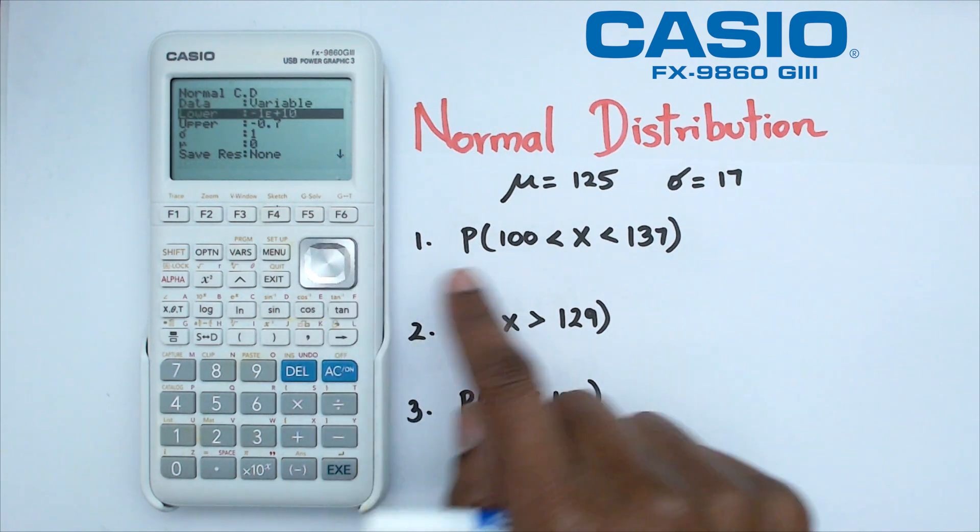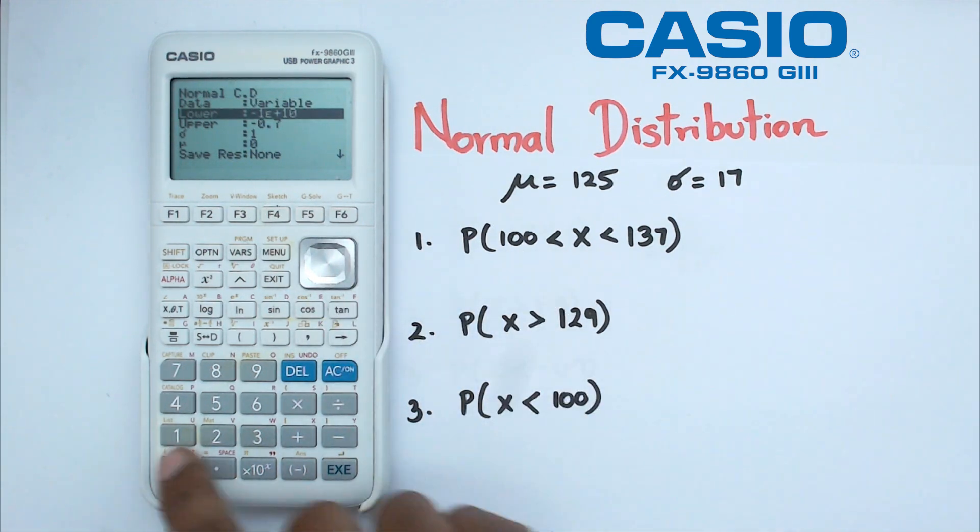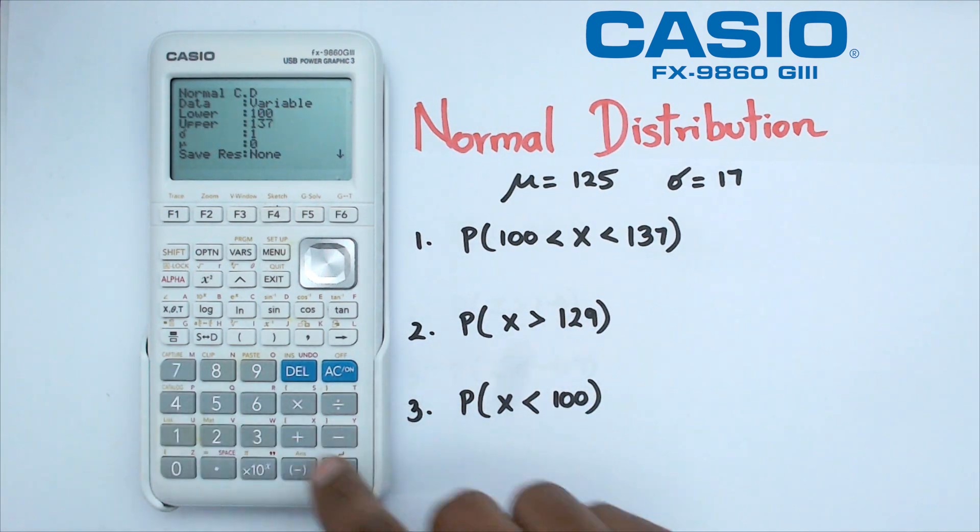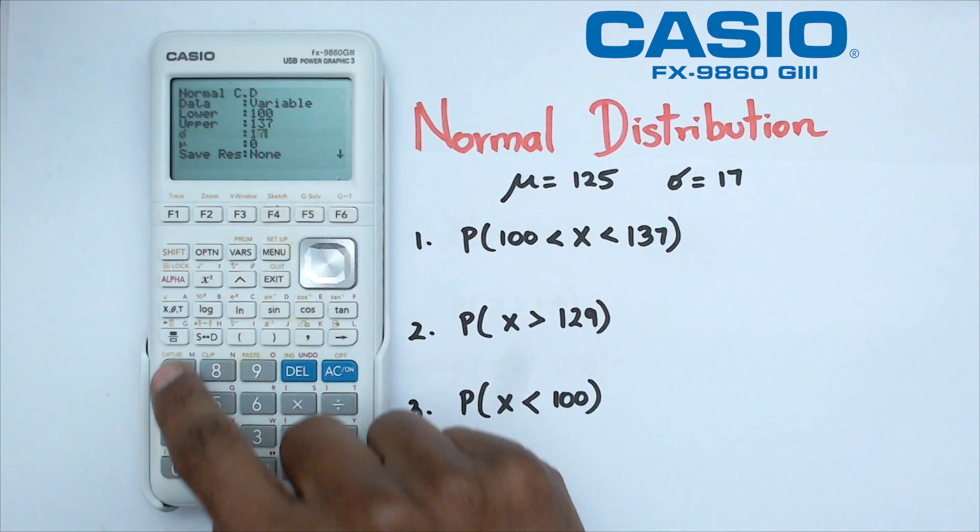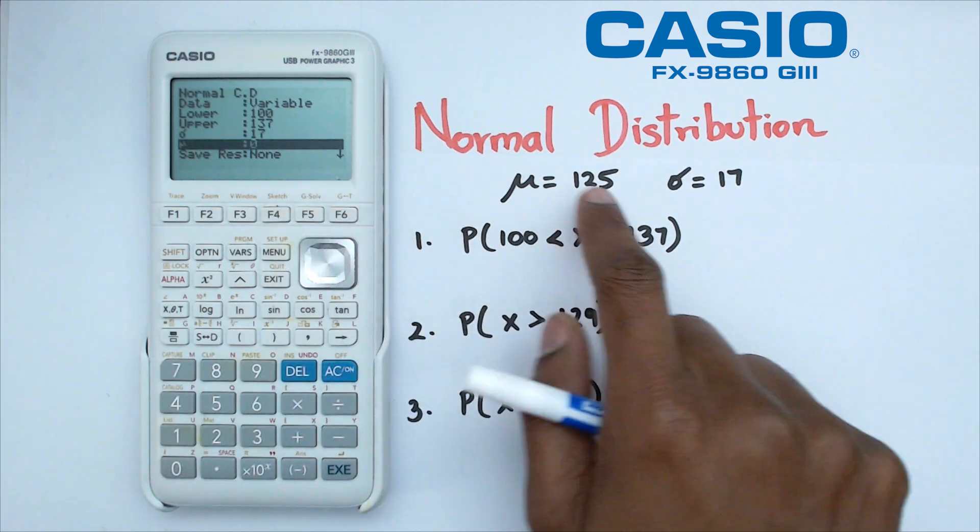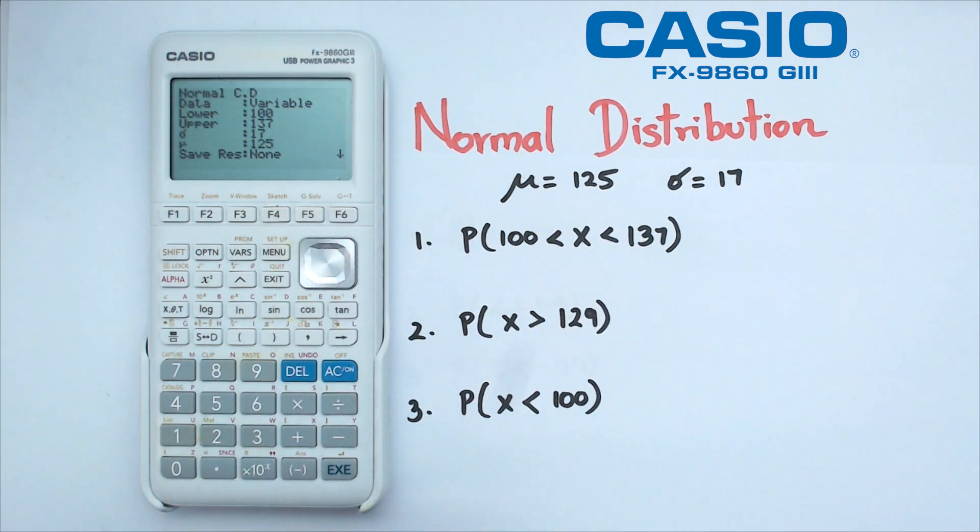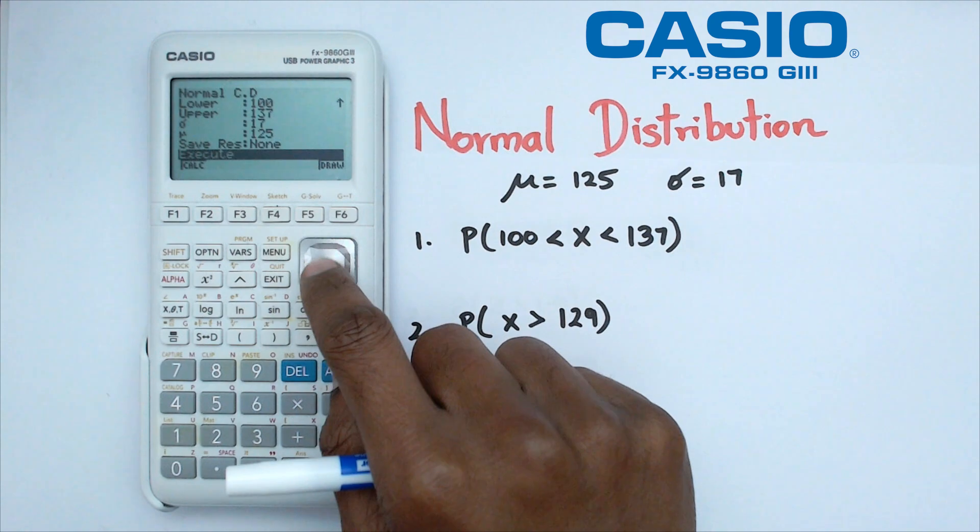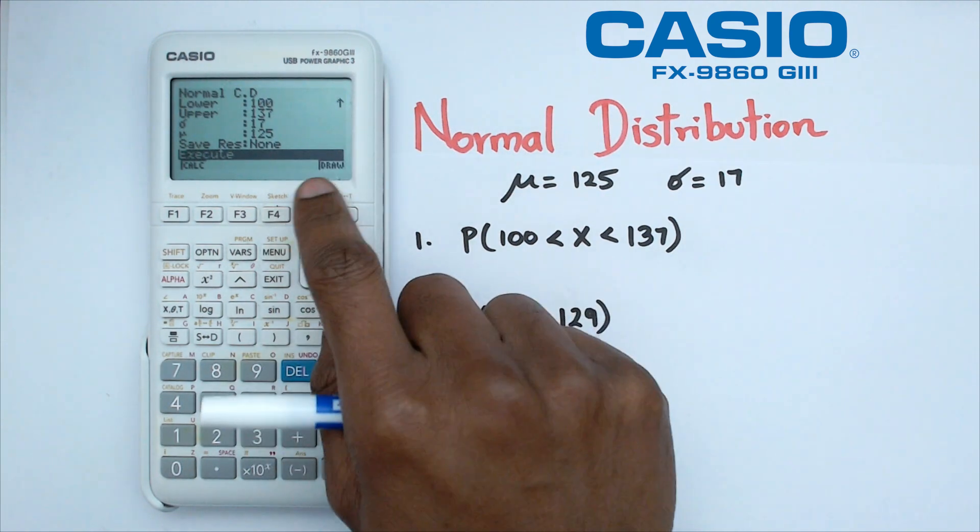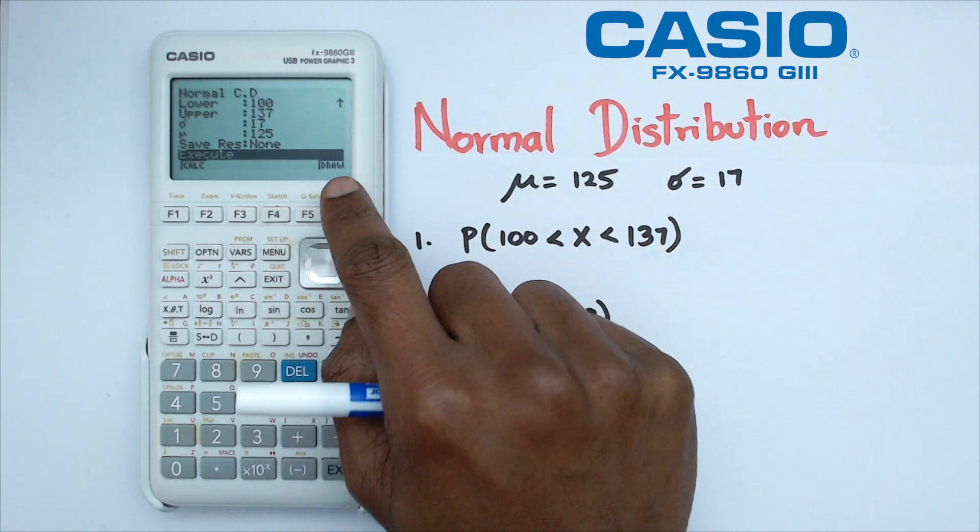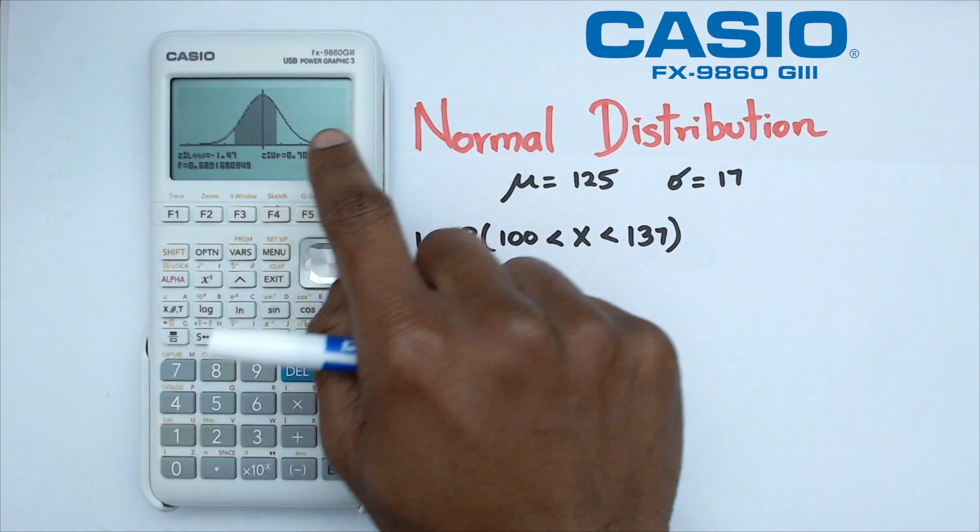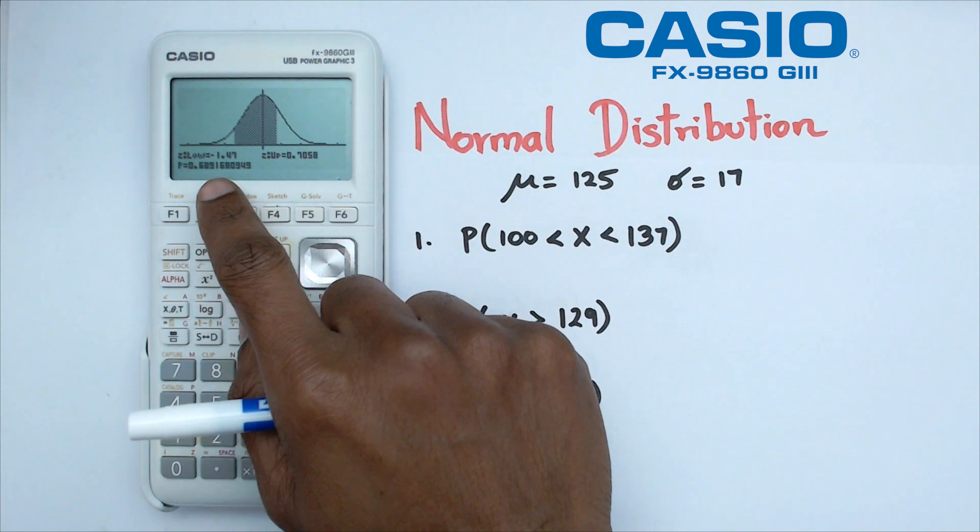Now, if you look at the first question, our lower limit is 100, so we're going to click on 100. Our upper limit is 137, and our standard deviation is 17, and our mean is 125. You can actually press EXE straight away, which means you're going to get the probability, but what I like to do is drop down one more step to the draw button, and we're going to click on F6. What that does is it actually shows you the diagram as well as the probability.